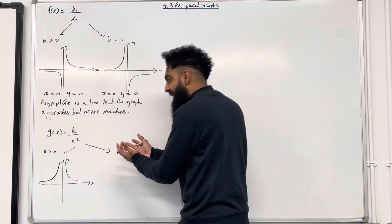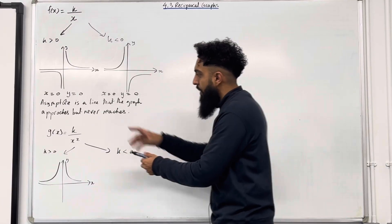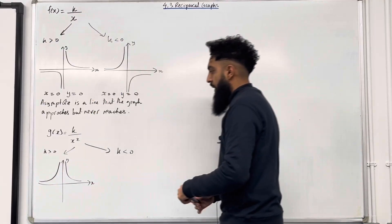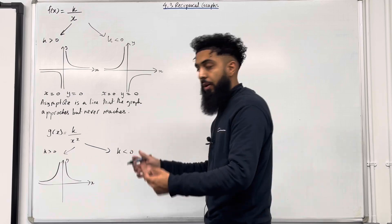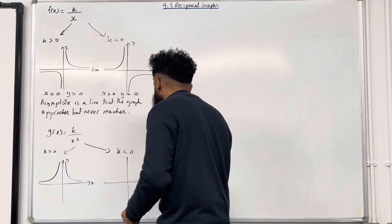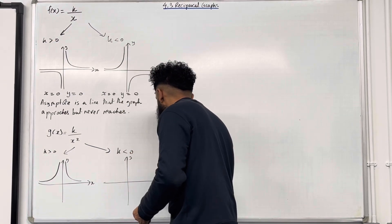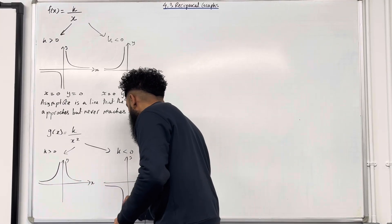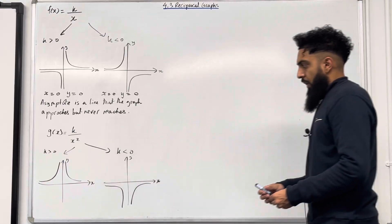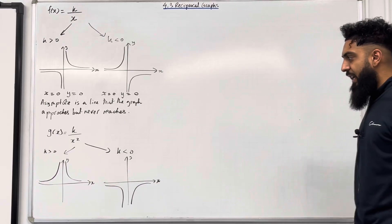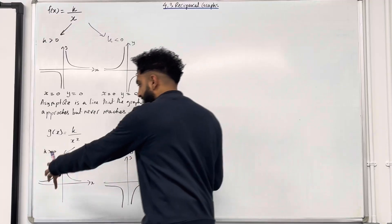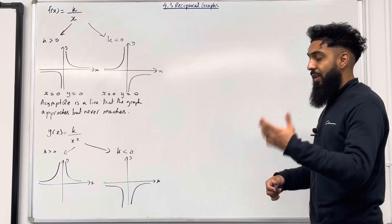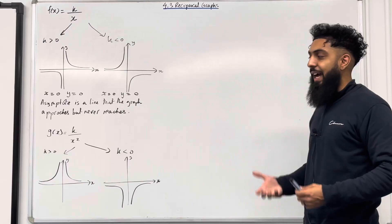Now let's look at k is less than 0. When k is less than 0, in other words when the numerator is negative, these two curves get flipped downwards. So the shape of the graph would be as follows. I've got my y axis and my x axis. These two curves get flipped downwards, so it looks something like this. Now let's identify the asymptotes. In both cases, the curve approaches but never reaches the y or the x axis, so the y and x axis are again the asymptotes.